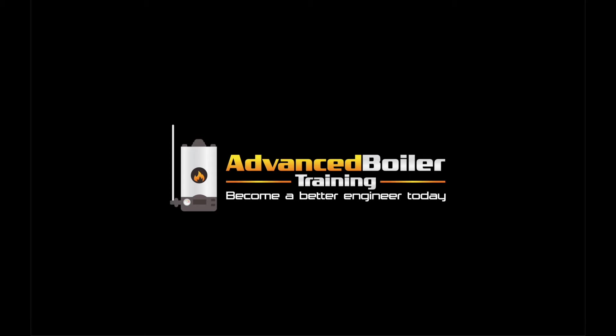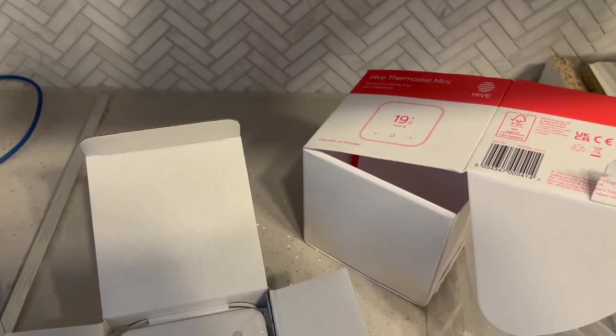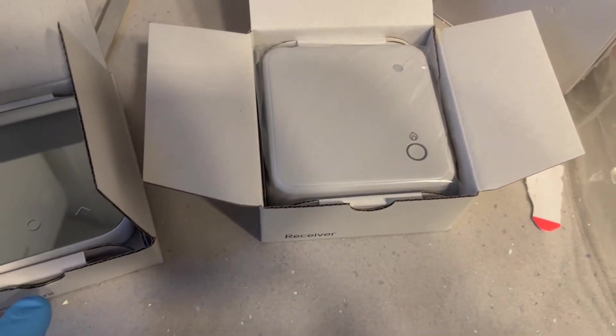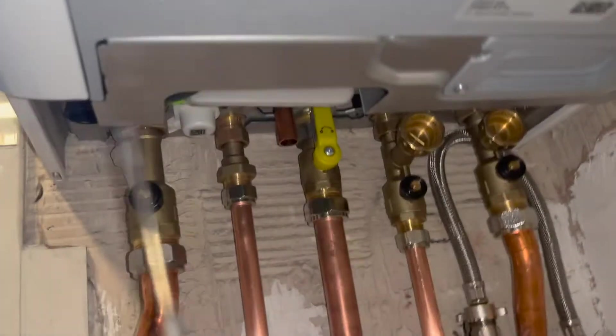In this video we're going to be taking a look at wiring a Hive thermostat mini to a Worcester 2000. If you open up all the packaging, this is pretty much what you should get: the receiver, thermostat, and a little booklet. First thing we're going to do is undo the two screws underneath the boiler, and that's going to allow us to take the front case off.